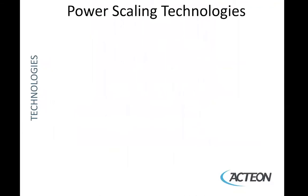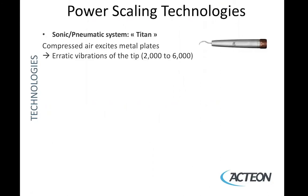There are three types of power scaling technology. The first is sonic — an example of that would be Titan. The sonic scaler uses compressed air; it's connected to the delivery system and the compressed air excites the metal stacks, creating erratic vibrations and a tip movement at 2,000 to 6,000 times per second.